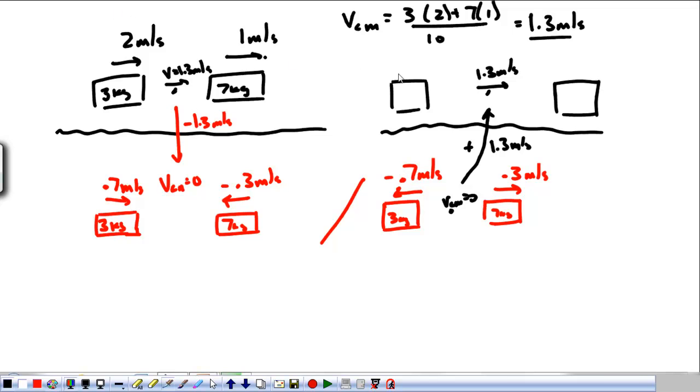Okay, so this is now moving forward in the positive direction at 0.6 meters per second. So, the 3 kilogram object. And then positive 0.3 plus 1.3. This is now moving in the same direction. 7 kilogram object at 1.6 meters per second.